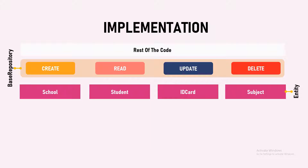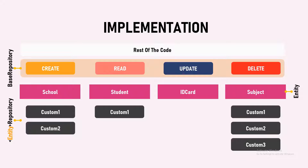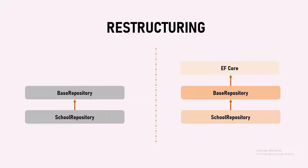So school will also get create, read, update, delete. Student will also get create, read, update, delete. ID card will also get create, read, update, delete. And subject will also get create, read, update, delete. If you have any specific implementation that's related to school, you can put it inside the school repository. If you do not have any specific implementation, like here with ID card, you can leave it. That specific layer of repository is what we call an entity repository. If you look at the right side, we have the entity repository that is the school repository. The school repository is inherited from the base repository, meaning everything in the base repository will be available in the school repository.